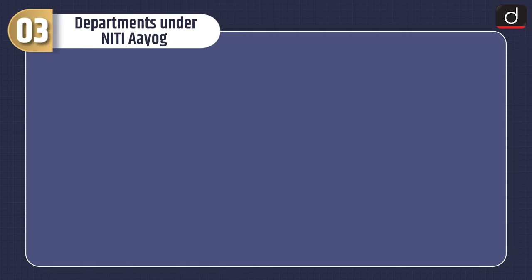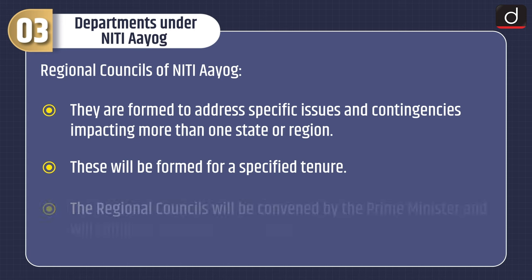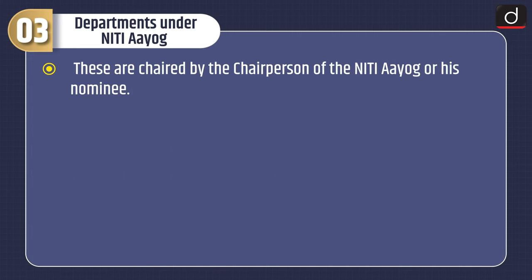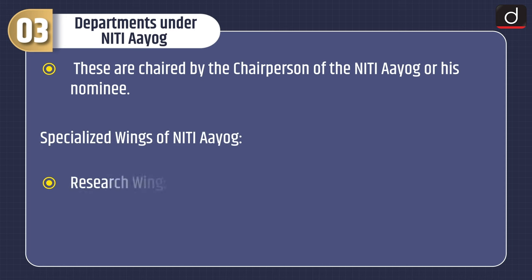Now moving on to departments under NITI Aayog. First is Regional Councils of NITI Aayog. They are formed to address specific issues and contingencies impacting more than one state or region. These will be formed for a specified tenure. The Regional Councils will be convened by the Prime Minister and will comprise of the Chief Ministers of States and Lieutenant Governors of UTs in the region. These are chaired by the Chairperson of NITI Aayog or his nominee.